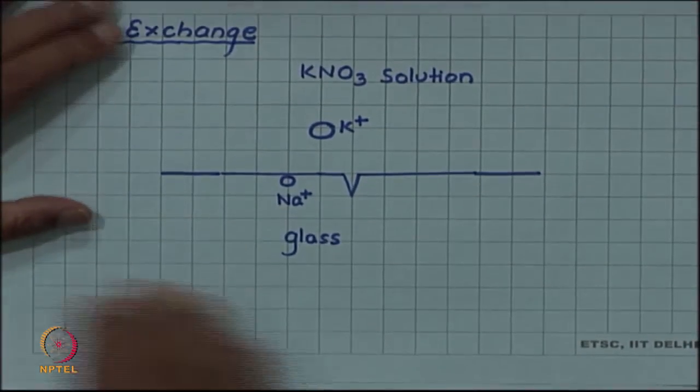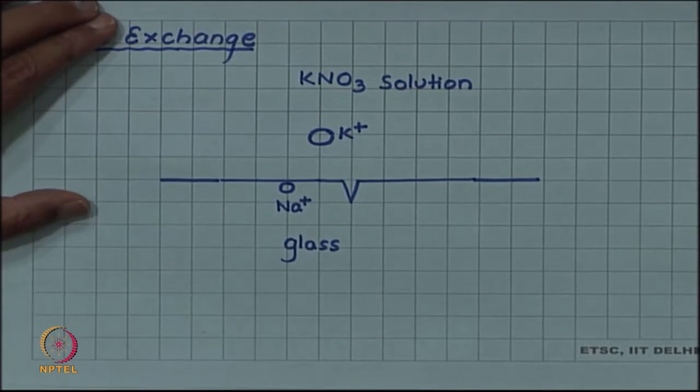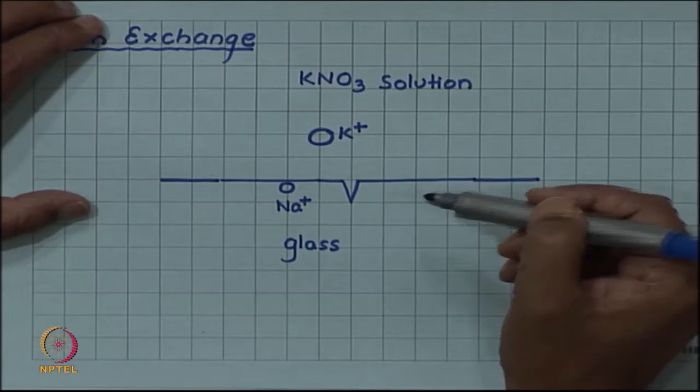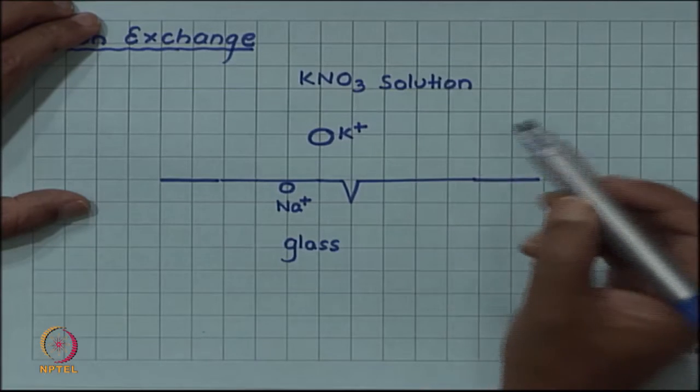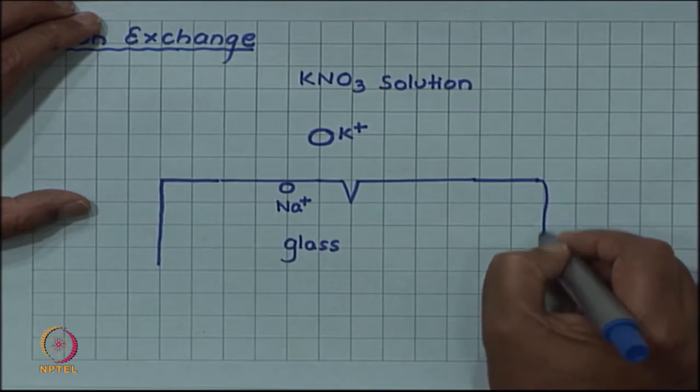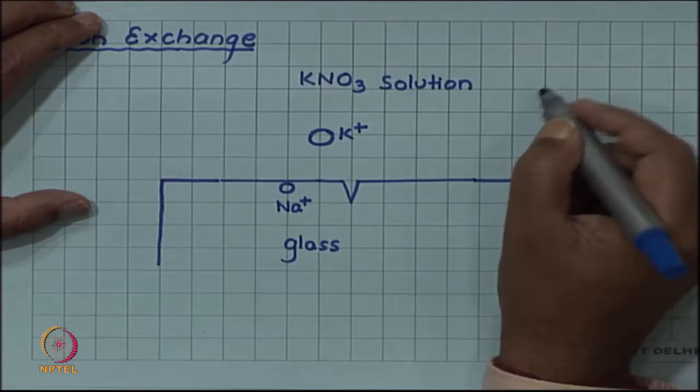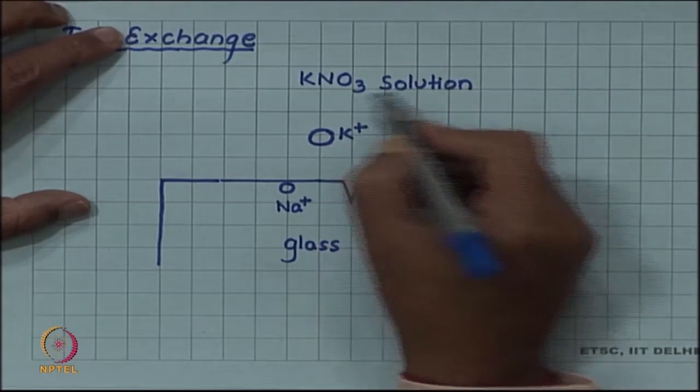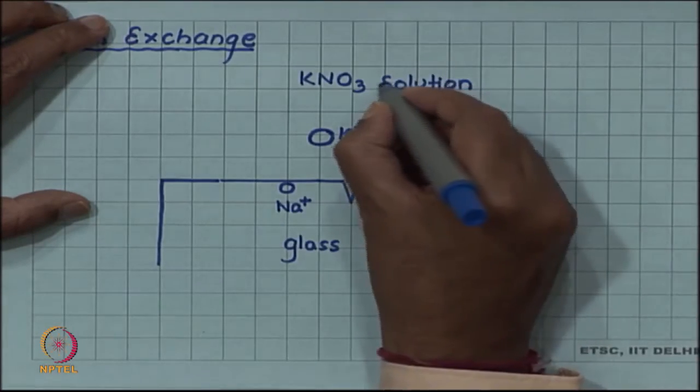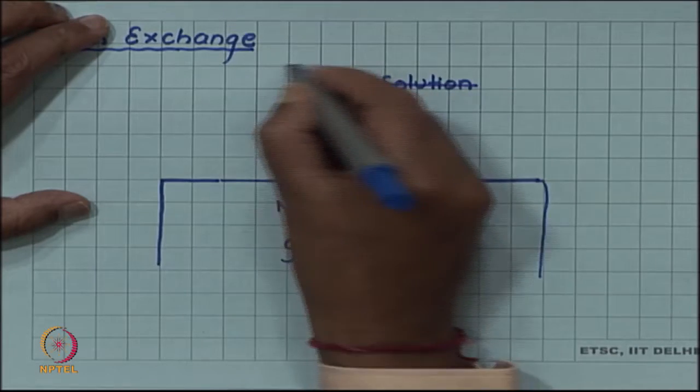Here a glass surface - below this line is glass and it is exposed to, let us say that this is glass, it is exposed to KNO3 solution, but molten KNO3.